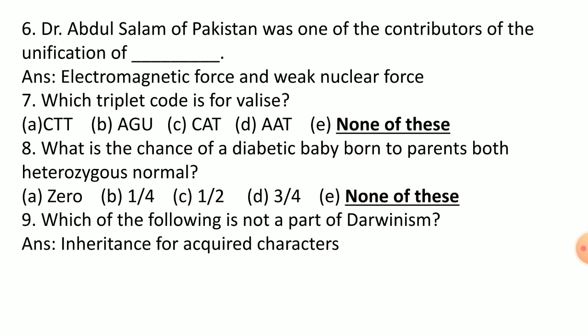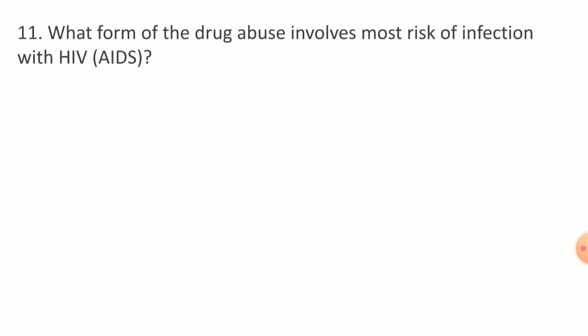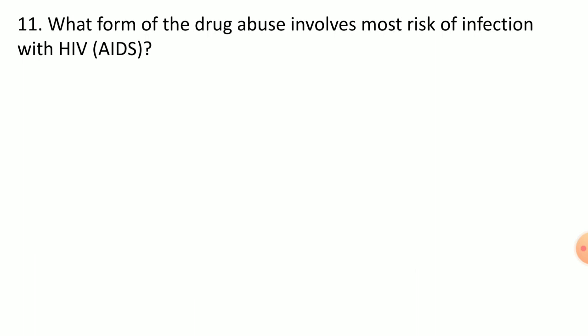Darwinism relates to Charles Darwin's theory. The rate of biotechnology in the production of food is based on fermentation. What forms of drug abuse involves most risk of infection with HIV AIDS? Injection of heroin.